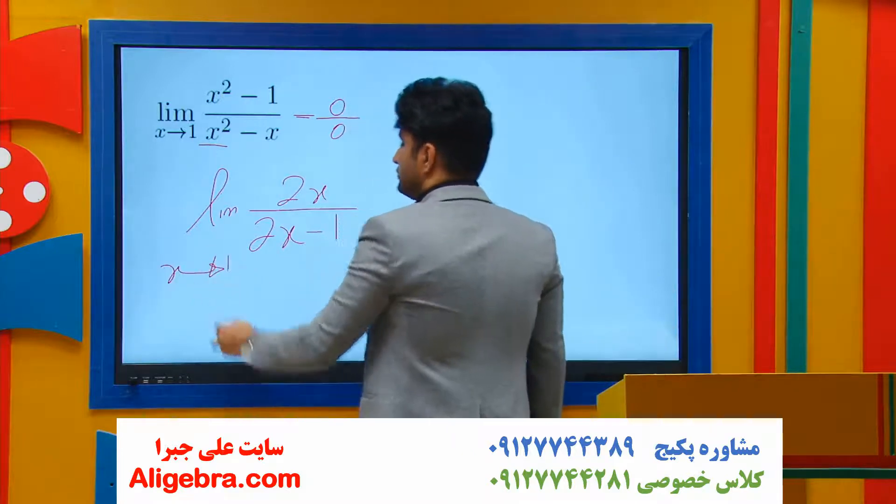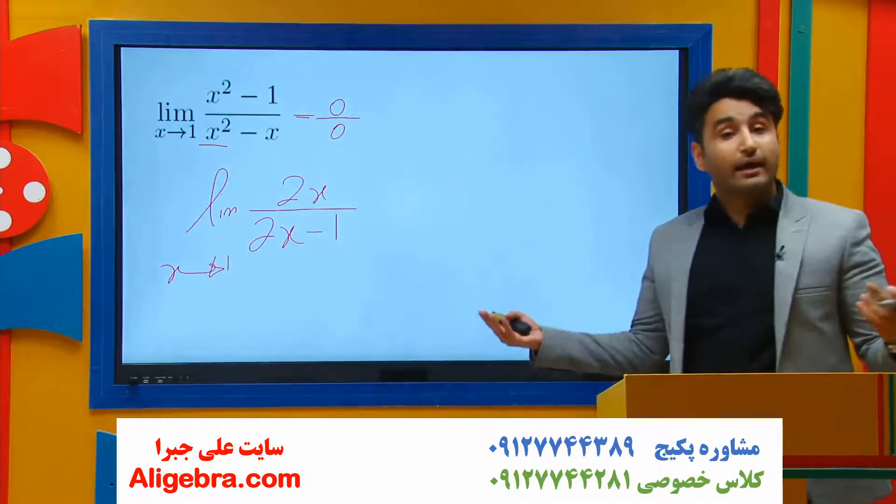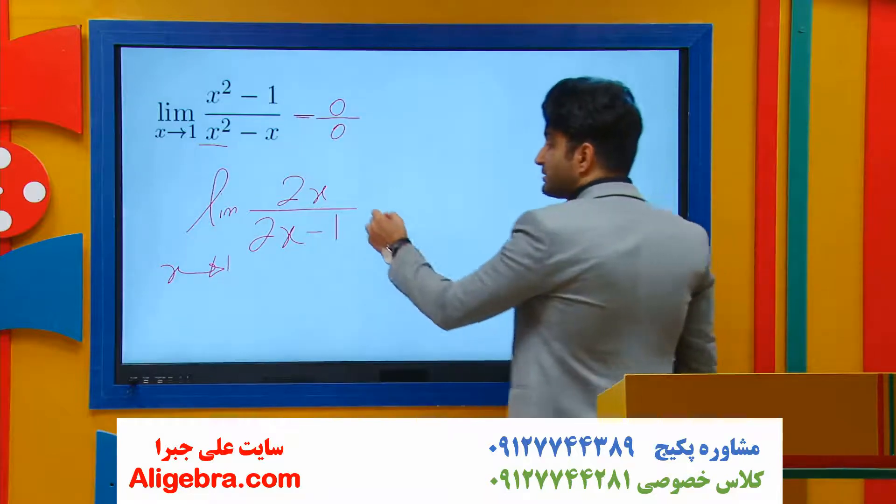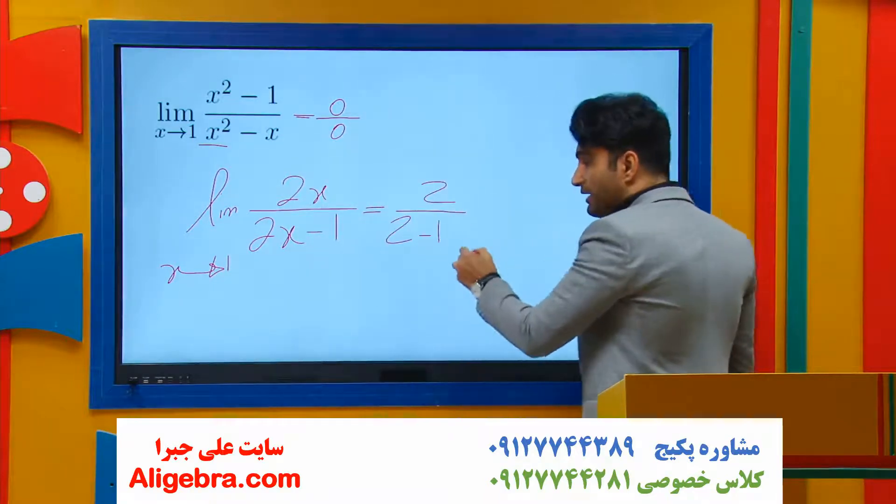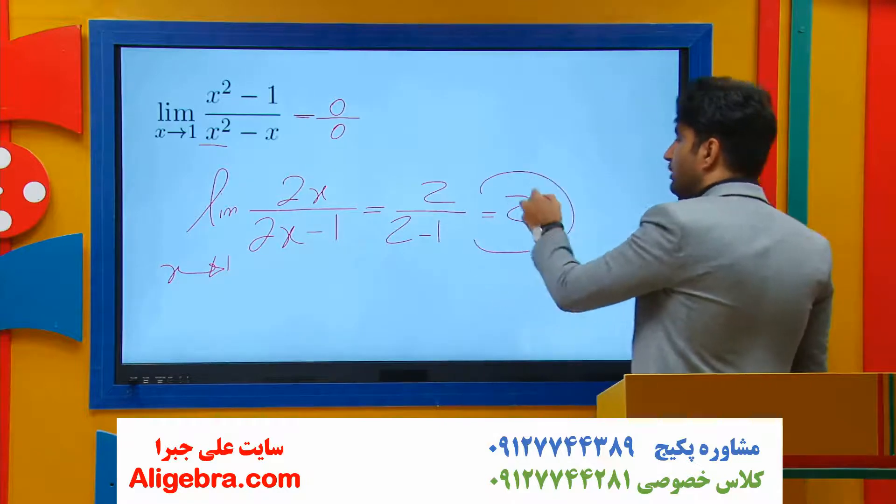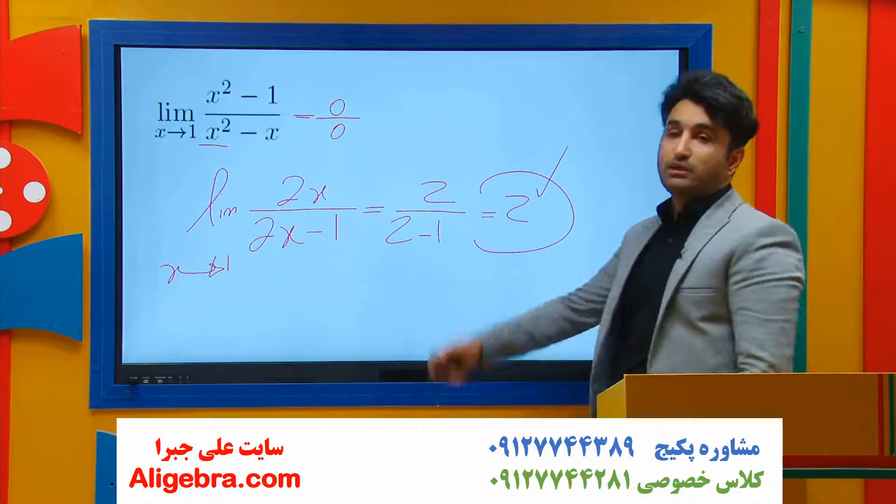Now use direct substitution again. If I replace x with 1 on top, I have 2, and on the bottom, 2 minus 1, which gives me 2 as the final answer for this problem.